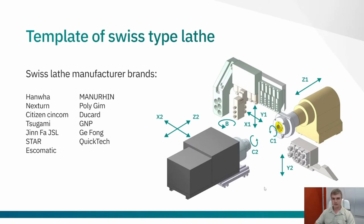Before we start, I would like to explain what we understand under the Swiss-type lathes. On the screen you can see the typical structure of this kind of machine. Usually this machine contains a main spindle C1 and a sub spindle with axis C2.